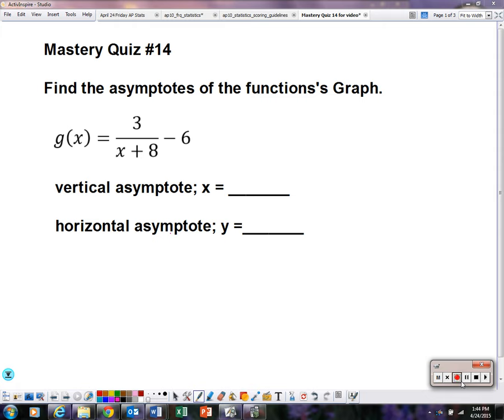First of all we're going to find the vertical asymptote. Take what you see in the denominator, x plus 8. We want to know what will make that equal 0. So take x plus 8, set it equal to 0, and solve.